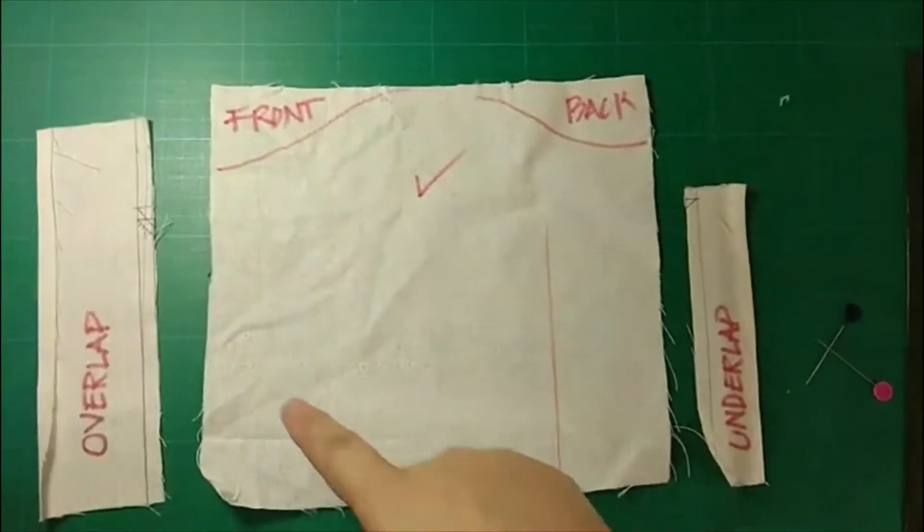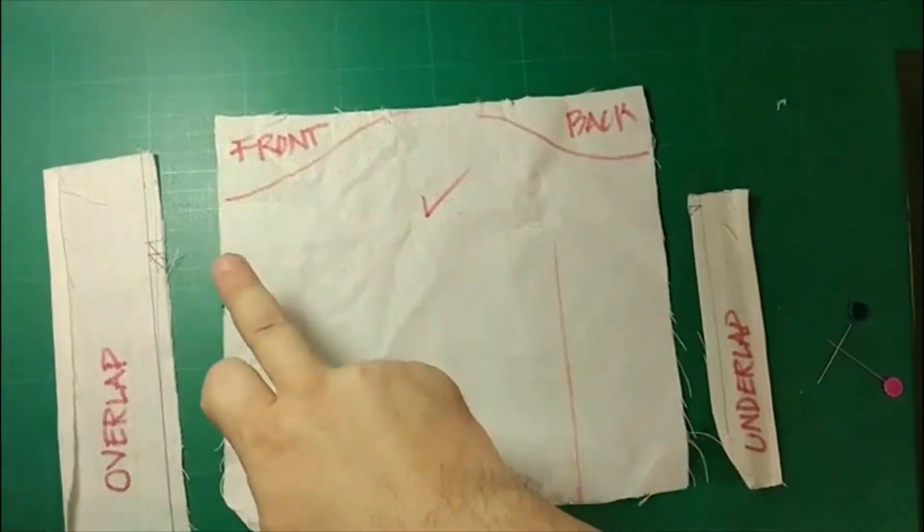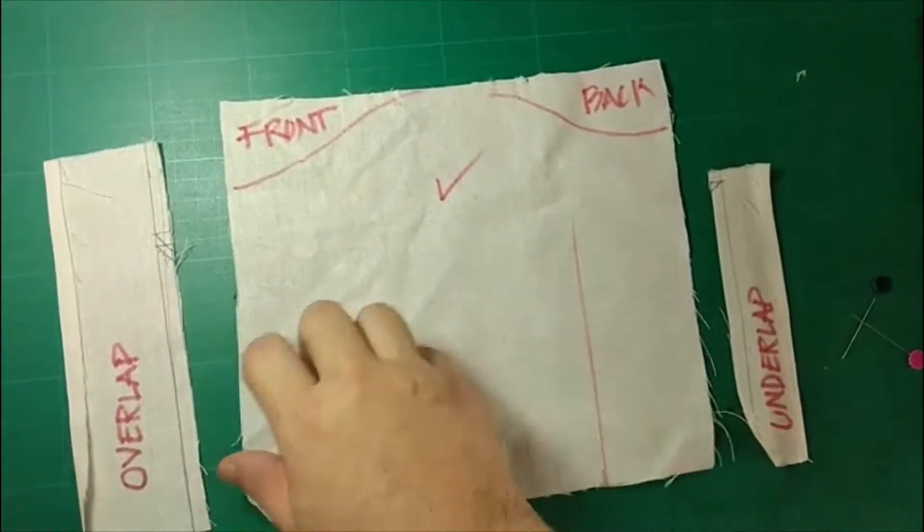Our topic for today is sleeve plackets. This is the representation of your sleeve. I just made it small so it should fit in my camera. Let's pretend that this is the front side and this is the back side. The check mark is the right side of your fabric and the cross mark is the wrong side of your fabric.